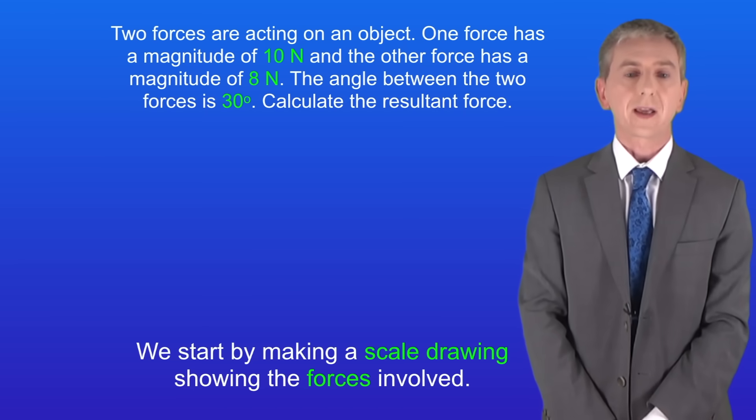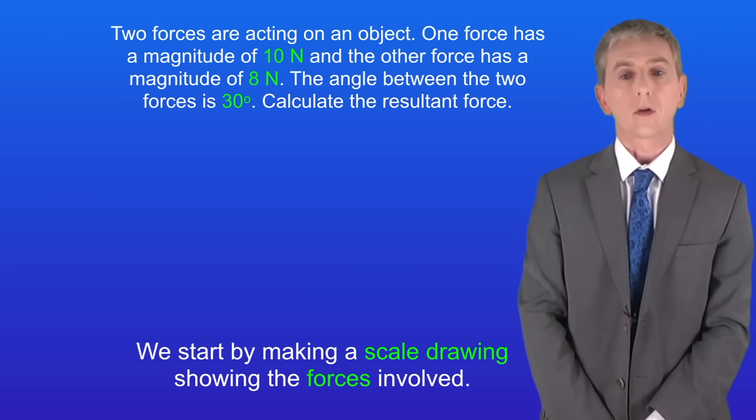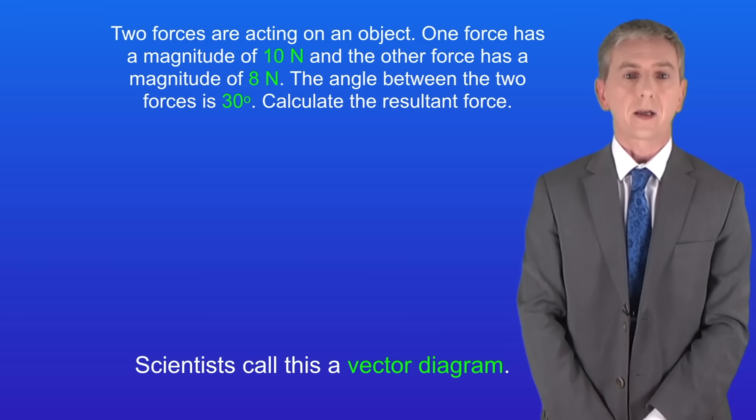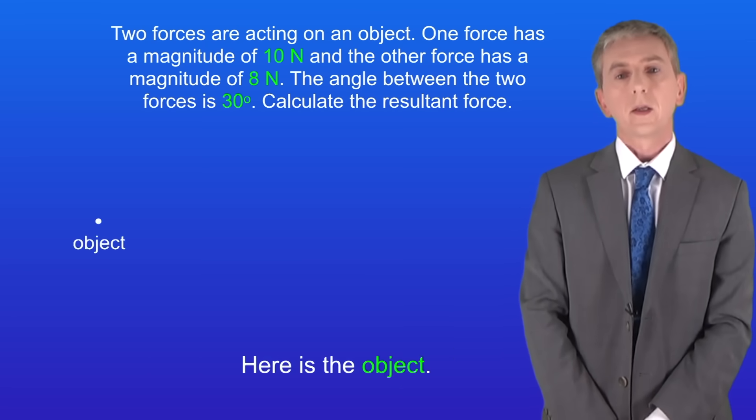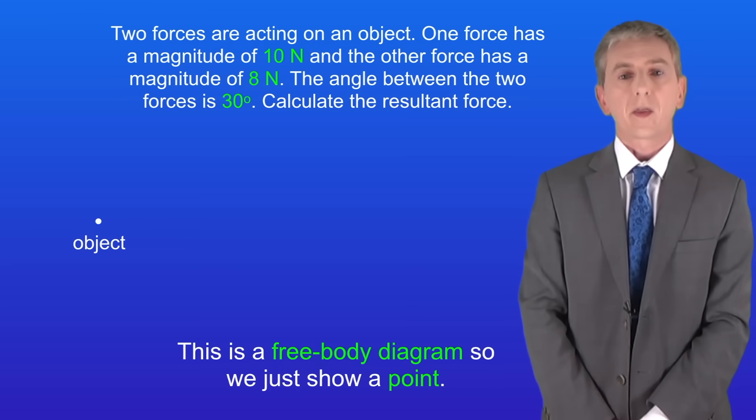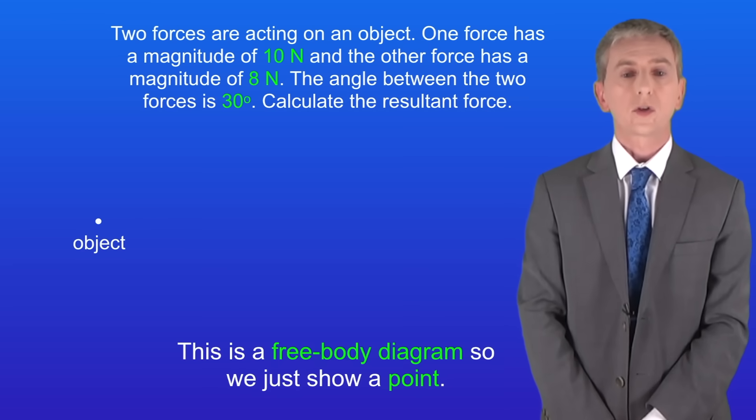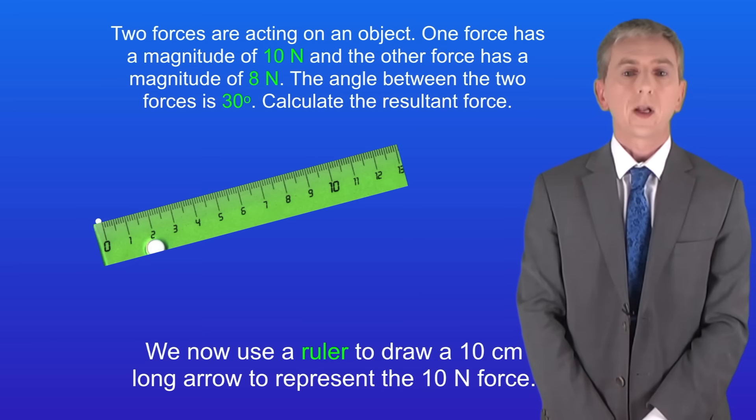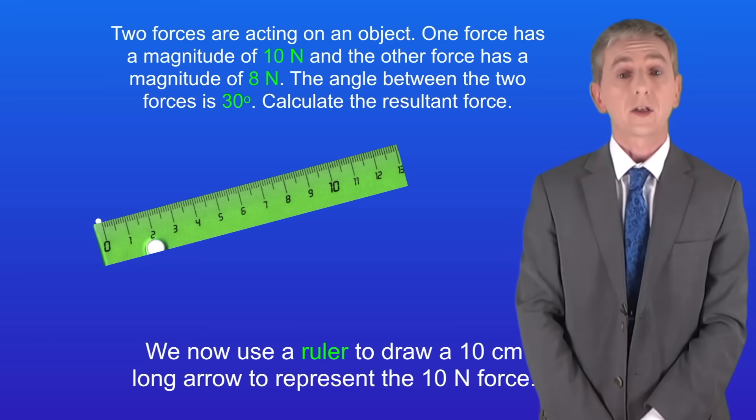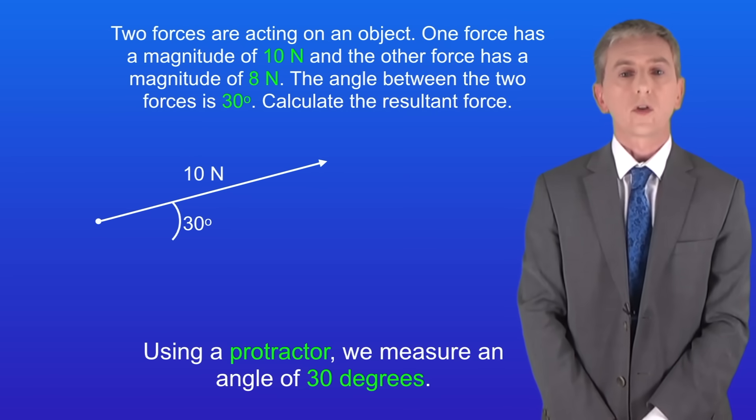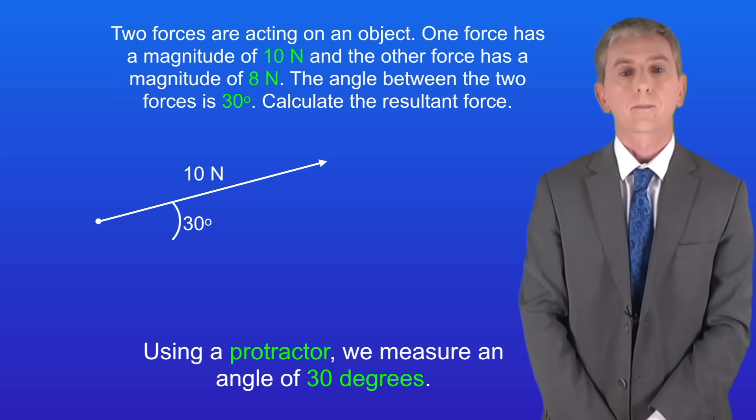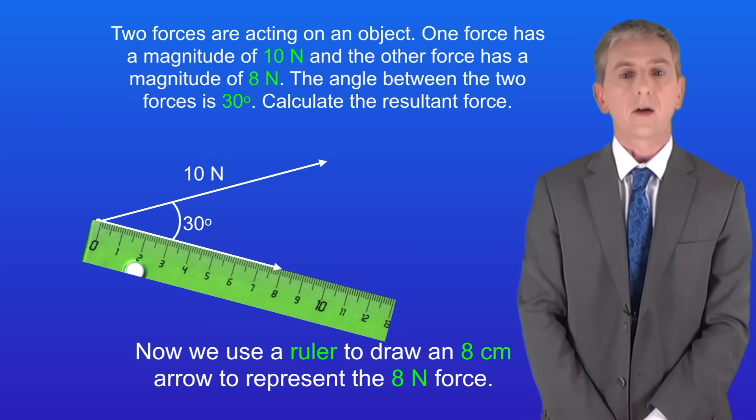We start by making a scale drawing showing the forces involved. Scientists call this a vector diagram. We're going to say that one centimeter equals one newton. So here's the object, and remember that this is a free body diagram so we just show a point. We now use a ruler to draw a 10 centimeter long arrow to represent the 10 newton force. Using a protractor we measure an angle of 30 degrees, and here it is.